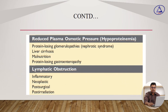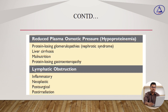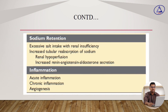Reduced plasma osmotic pressure due to protein-losing glomerulonephritis, nephrotic syndrome, liver cirrhosis, malnutrition, and protein-losing gastroenteropathy. Lymphatic obstruction due to inflammatory, neoplastic, post-surgical, or post-irradiation causes. Sodium retention due to excess salt intake with renal insufficiency, increased tubular reabsorption of sodium, renal hypoperfusion, and increased renin-angiotensin-aldosterone secretion. Inflammation also causes edema.